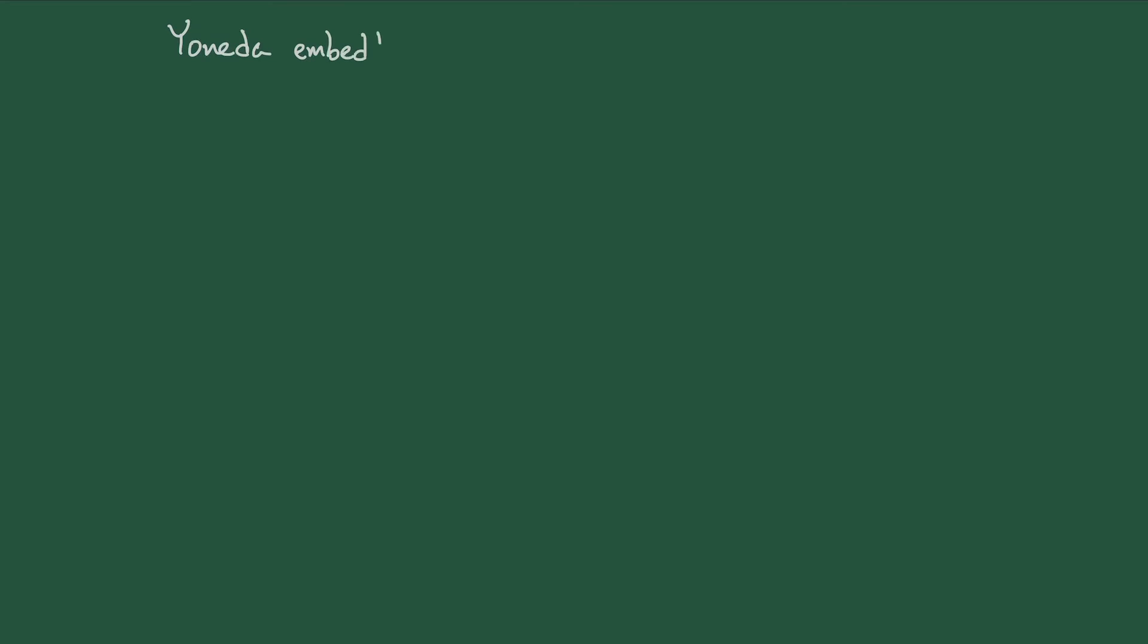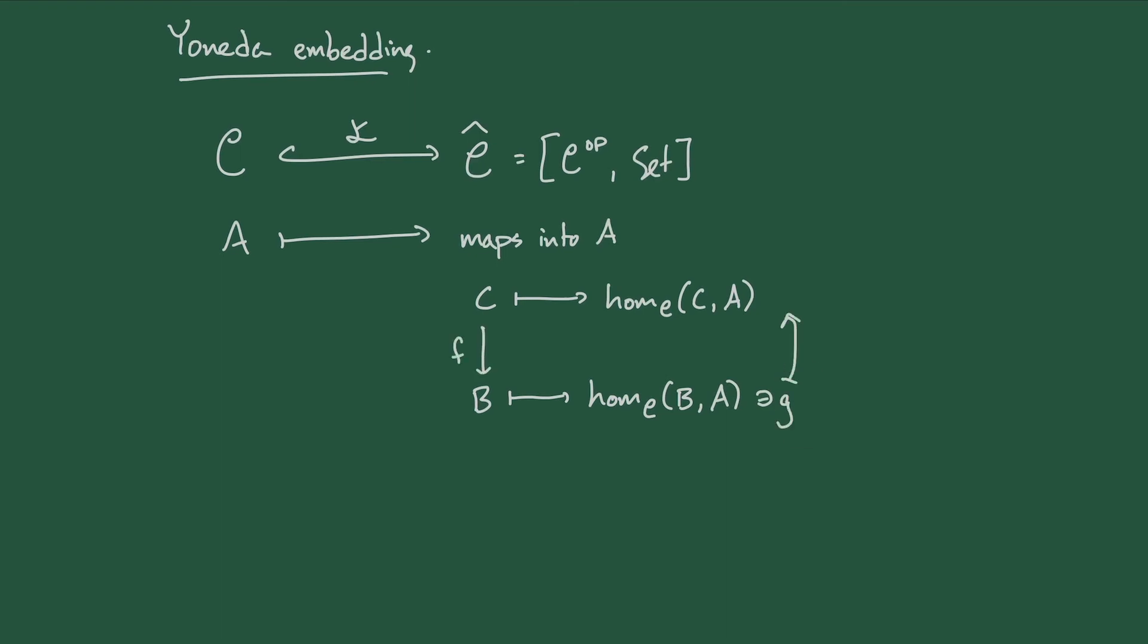We do this via what's called the Yoneda embedding. This is a functor from C to the presheaves on C. It sends every object A to the presheaf of maps into A. The way that presheaf works is it sends C to the set of morphisms from C to A. And this is a presheaf because the maps into A have an action by the category C, namely pre-composition. For every morphism from C to B, we can take maps from B to A to maps from C to A, just by pre-composing. This brings us to the Yoneda Lemma. But that's a story for another day.